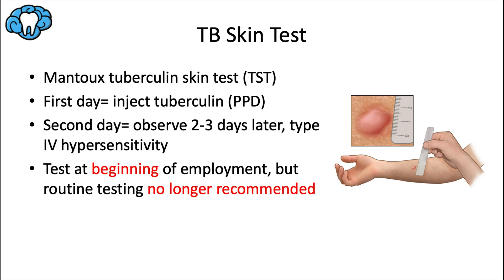Now let's talk about two kinds of tests to screen for tuberculosis in dental staff. The first is the TB skin test, also called the Mantoux tuberculin skin test, named after Charles Mantoux. It requires two separate days: on the first day, 0.1 mL of tuberculin purified protein derivative (PPD) is injected into the skin on the lower arm. You return 48 to 72 hours later to measure the size of the induration, which is a delayed type 4 hypersensitivity reaction.